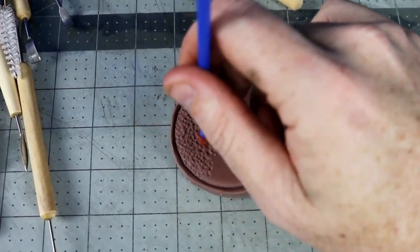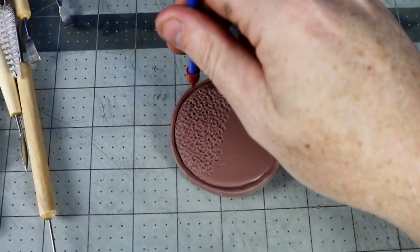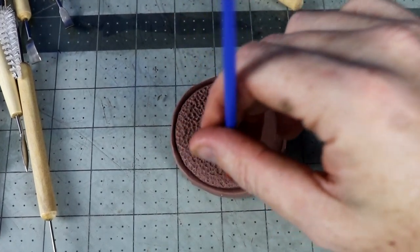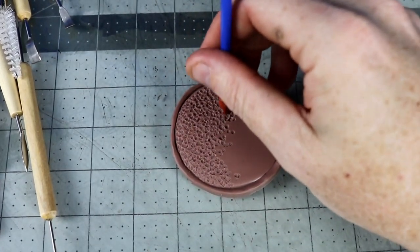I use a rubber tip tool and stipple my way across the inside of the rim to get the texture in the background.